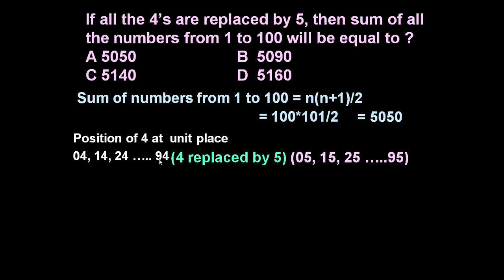So 10 such numbers are there: 4, 14, 24, 34, 44, 54, 64, 74, 84 and 94. 10 such numbers are there. Each number is increased by value 1. So total increase in value when 4 is replaced by 5 is equal to 10 into 1 is equal to 10.